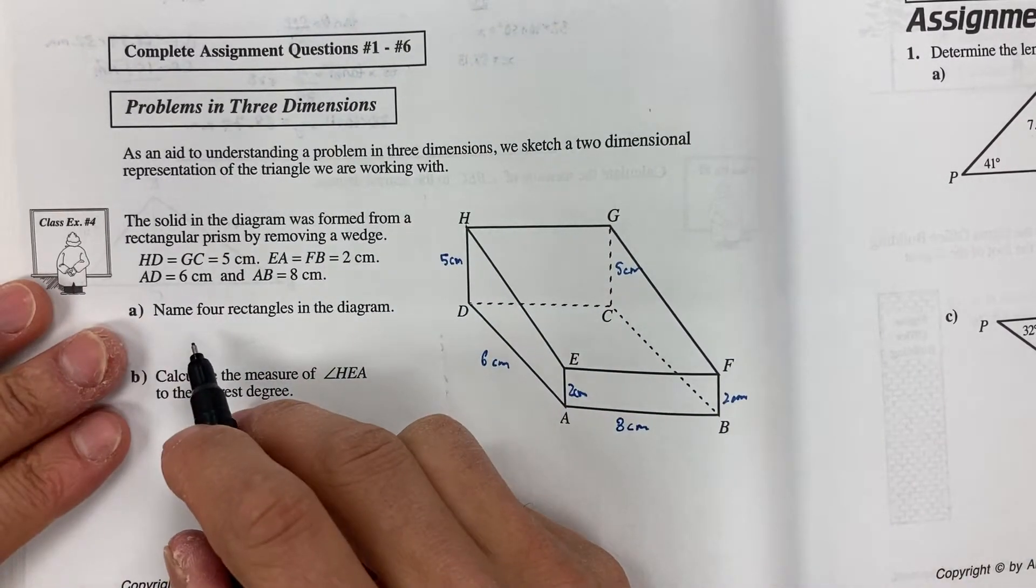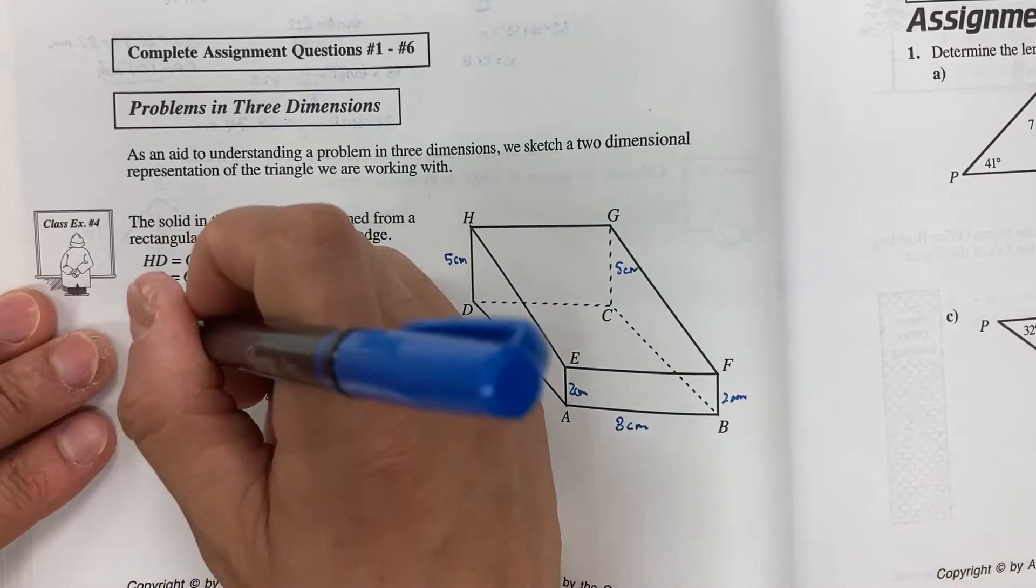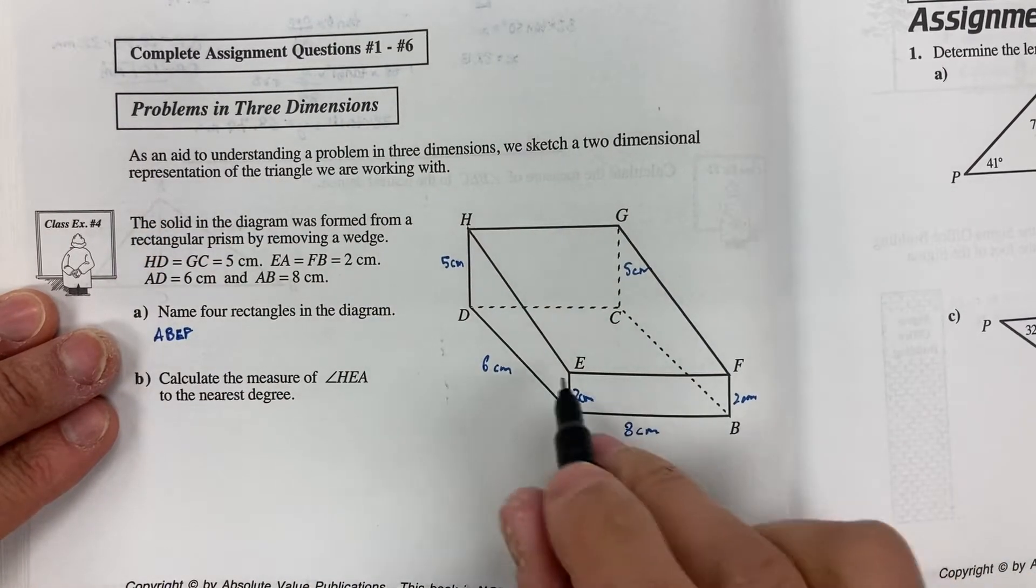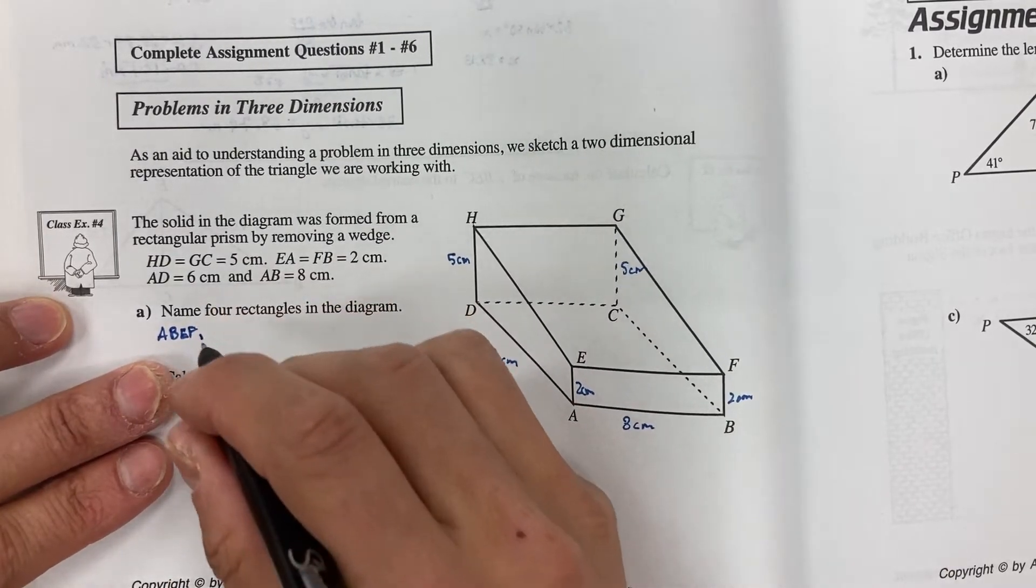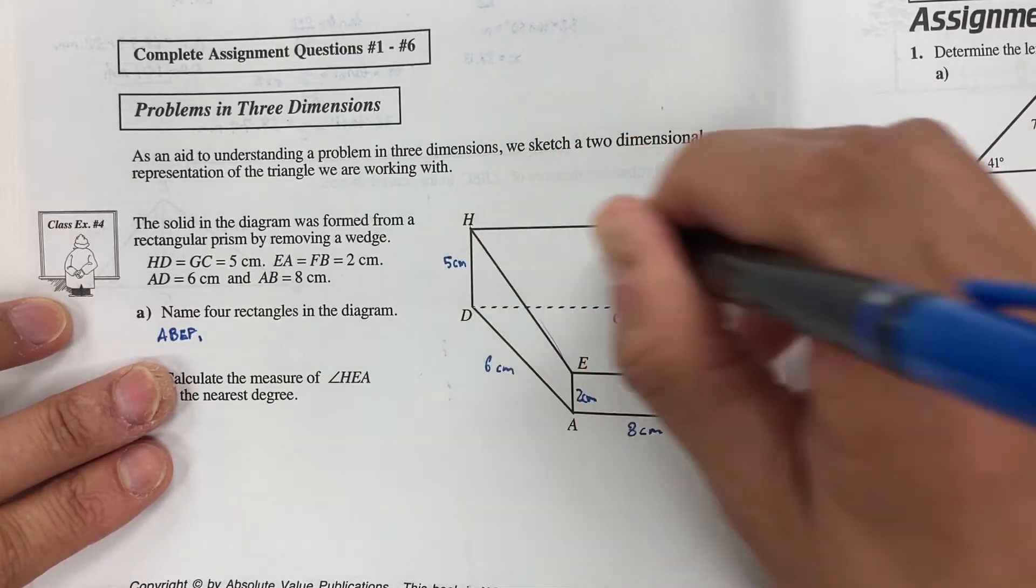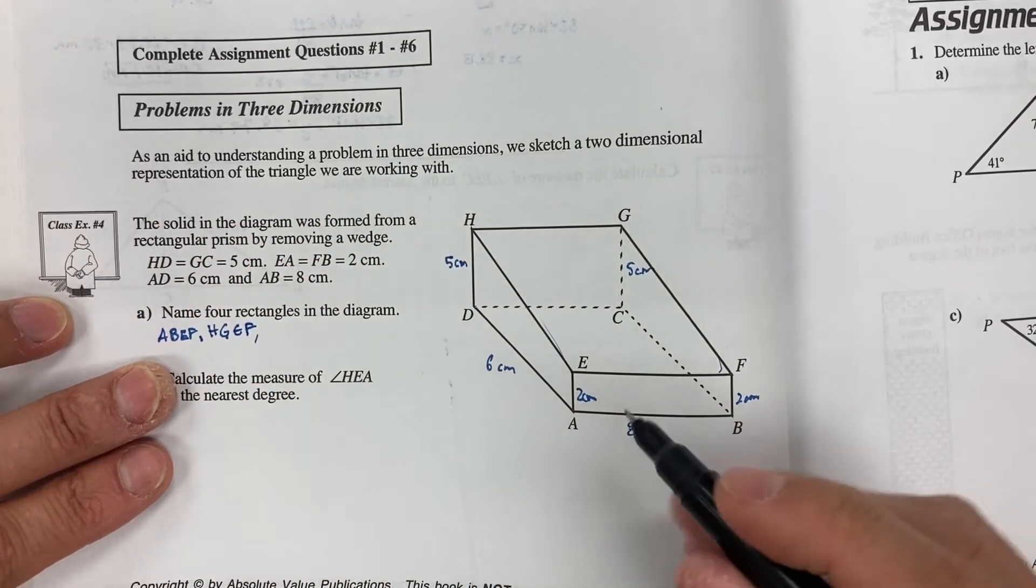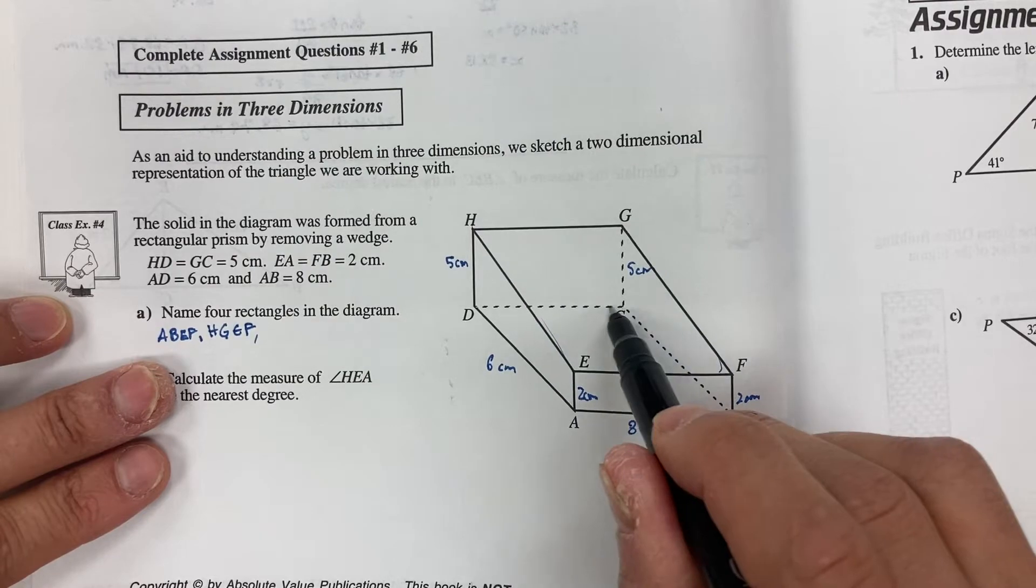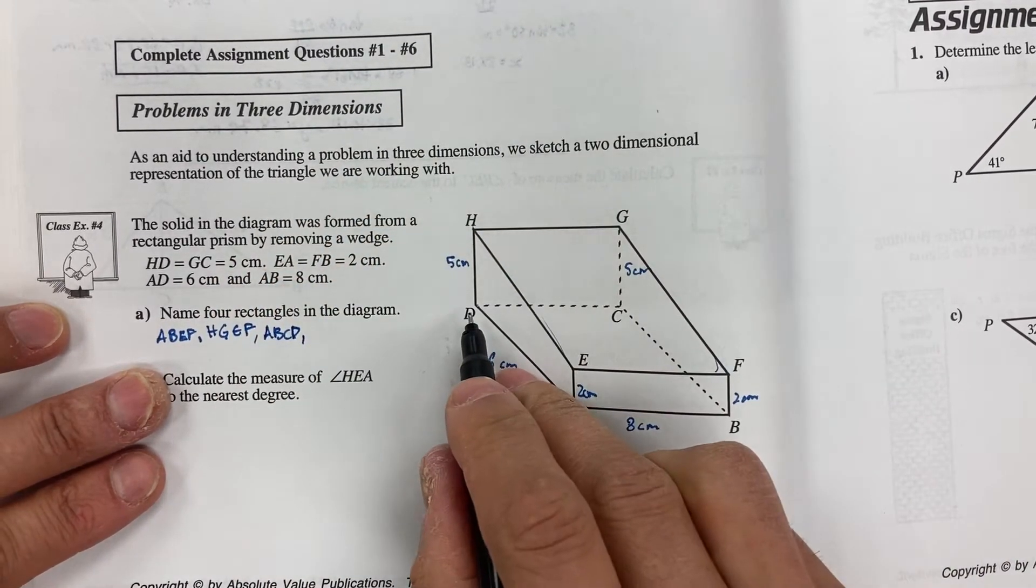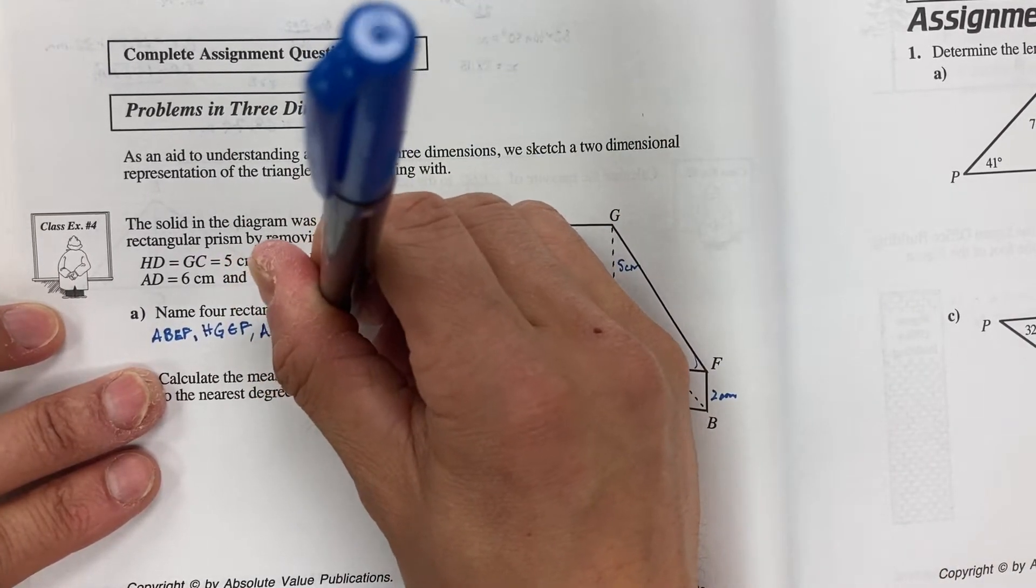And what we first want to do is name four rectangles in our diagram. Okay well I have AEFB or ABEF. Let's see what else I have. I have EHGF, so this is a rectangle here in the surface. Then I have ABCD. And then I have the back side here which is HDCG.